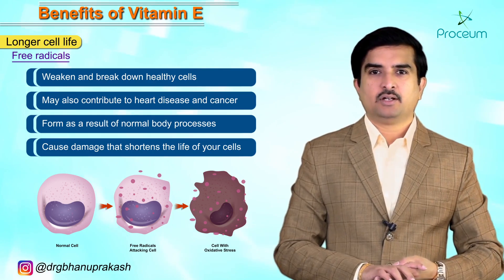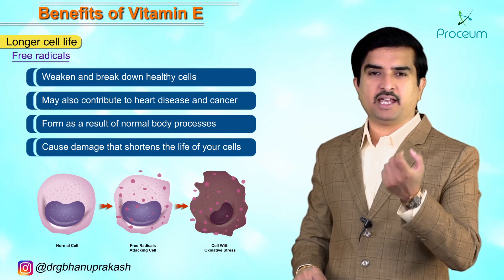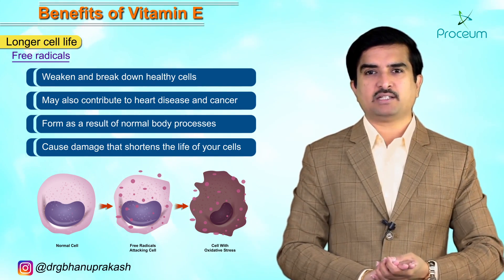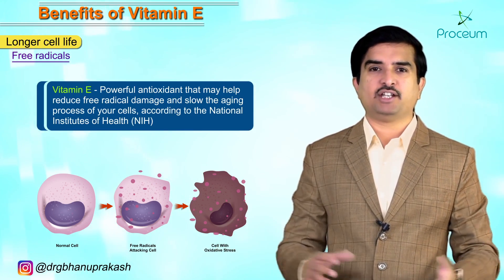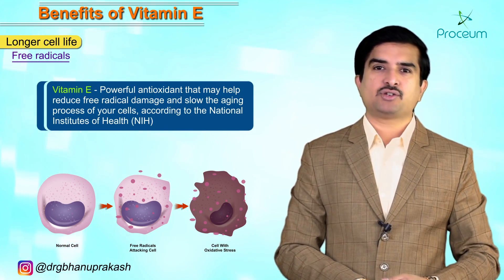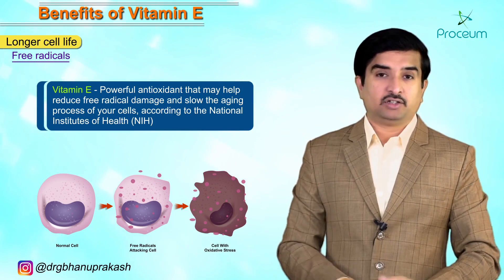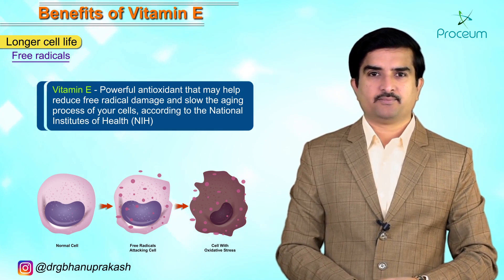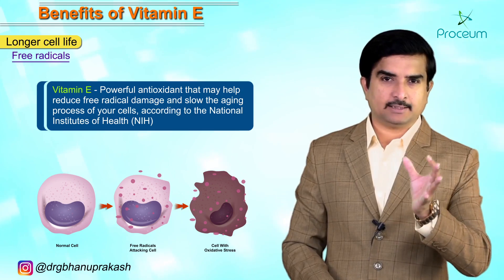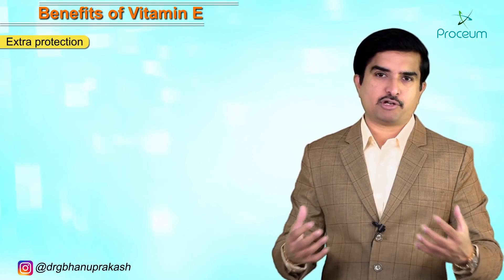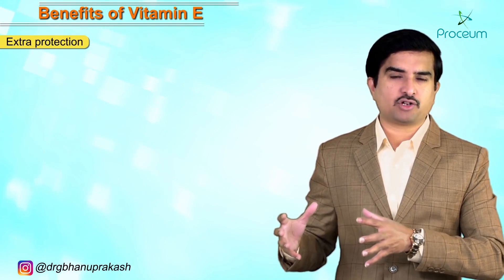To prevent all these things, vitamin E is a powerful antioxidant that may help reduce free radical damage and slow the aging process of cells. This is not just a claim — it is approved by the National Institute of Health. Vitamin E is also responsible for extra protection, but protection from what exactly?